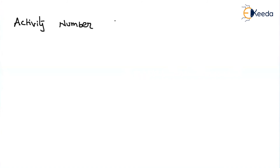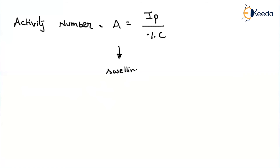Now let us come to the parameter activity number. Activity number, in general, is represented by A, and that is nothing but the plasticity index divided by percentage of C. If your soil has a different type of activity number, it defines the activity — that is, the swelling and shrinkage properties. The more the activity number, the more the swelling and shrinkage properties, and the more dangerous it will be.